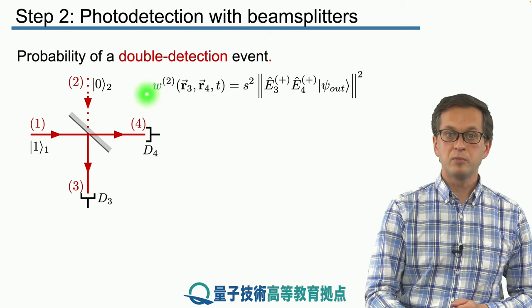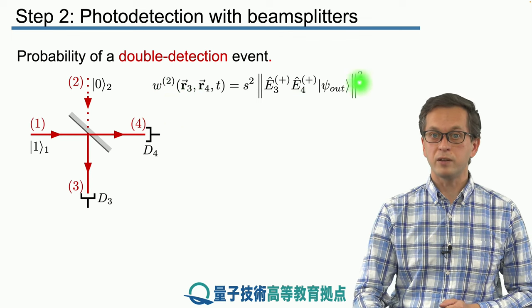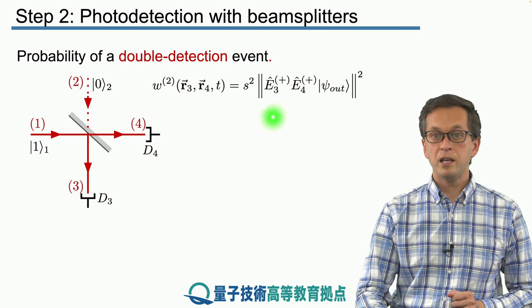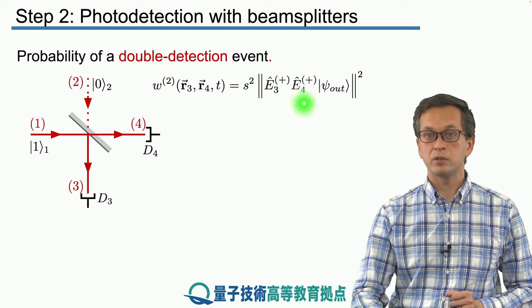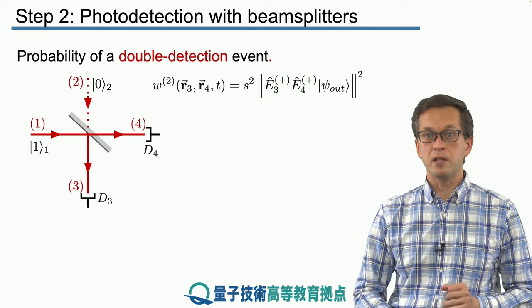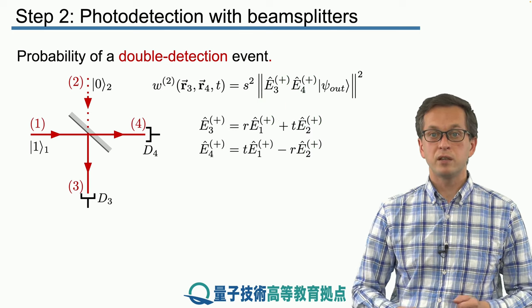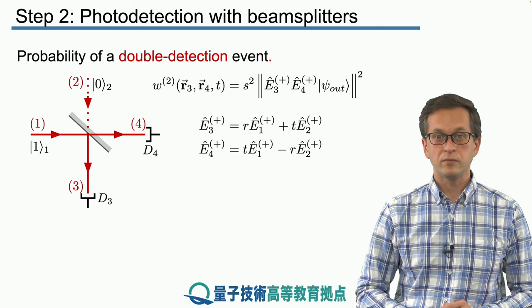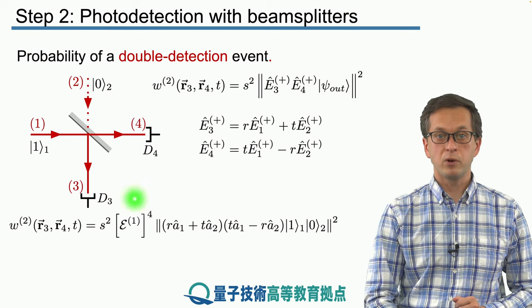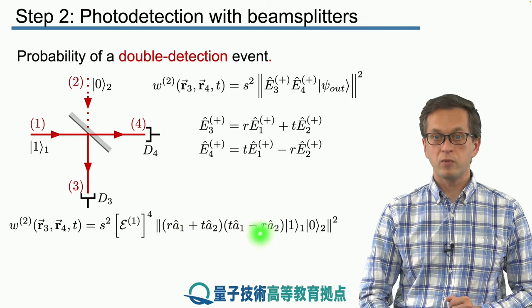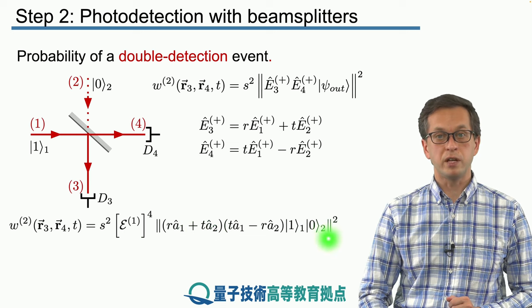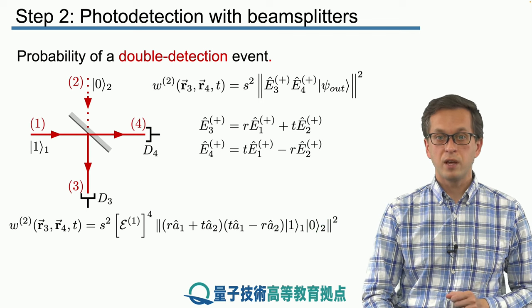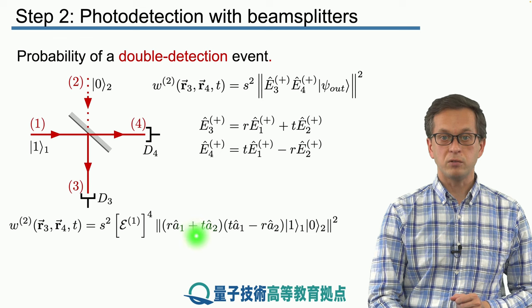So we use the same formula that we explained in the previous lesson. The photodetection signal W2 for a coincidence event is given by the following. We have S squared, we are assuming same sensitivity for both detectors, and then we've got our output operators E3 and E4 applied to psi out, which we rewrite in terms of the input state and also the input operators. And after substitution we get the following expression. So we have to think what happens when all of these operators act on our input state. Notice again the mode 2 is in input 0, it's in vacuum, and we've got all of these A2s acting on the vacuum.